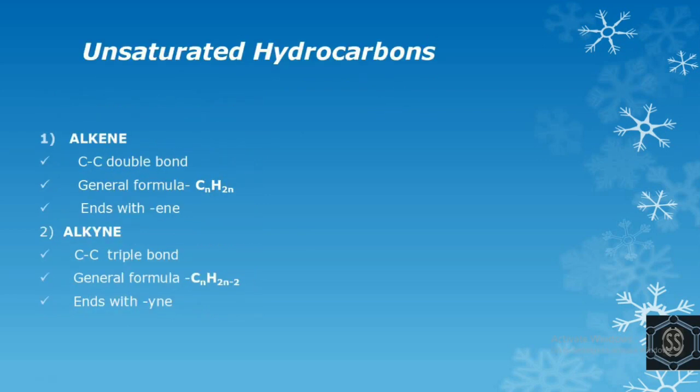Next category comes unsaturated hydrocarbons. Hydrocarbons that contain carbon-carbon double bond or carbon-carbon triple bond are known as unsaturated hydrocarbons. Alkene and alkyne come under this category. First is alkene. In this, carbon-carbon double bond is present. Its general formula is CnH2n. It ends with 'ene'. Next is alkyne. It has carbon-carbon triple bond present in it. Its general formula is CnH2n-2. It ends with 'yne'.